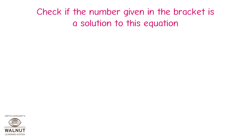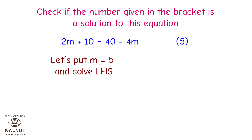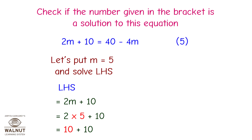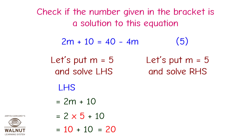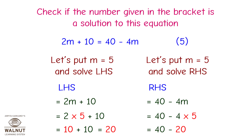Check if the number given in the bracket is a solution to this equation: 2m plus 10 is equal to 40 minus 4m, bracket 5. Let us put m equal to 5 and solve the LHS. LHS equals 2m plus 10 equals 2 multiplied by 5 plus 10 equals 10 plus 10 equals 20. Now for RHS: 40 minus 4m equals 40 minus 4 multiplied by 5 equals 40 minus 20 equals 20.